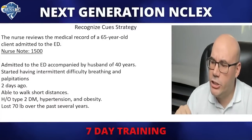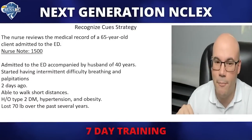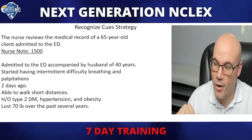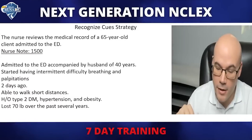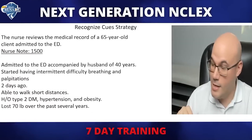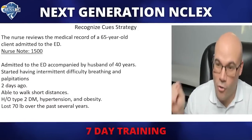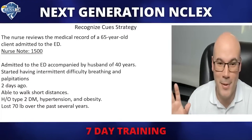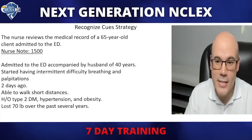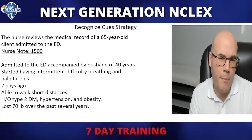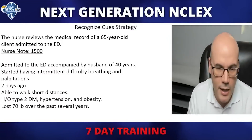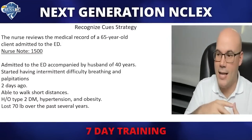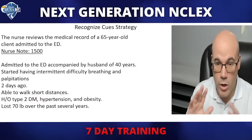The note continues: started having intermittent difficulty breathing and palpitations. We have an ABC problem here — this better be somewhere on your relevant information. Notice that we don't have here that the patient fell down, the patient has COPD, the patient has asthma. We don't know anything yet.